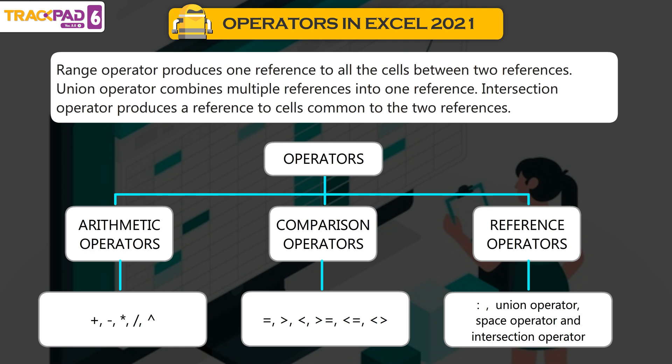Union Operator combines multiple references into one reference. Intersection Operator produces a reference to cells common to the two references.